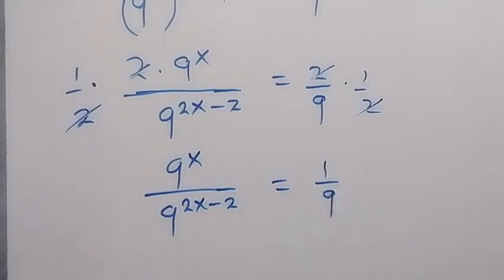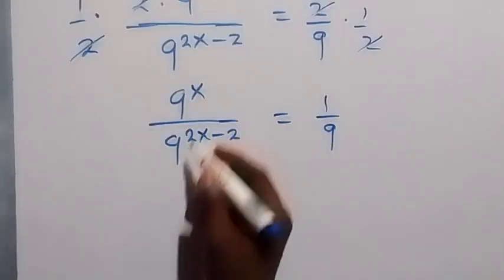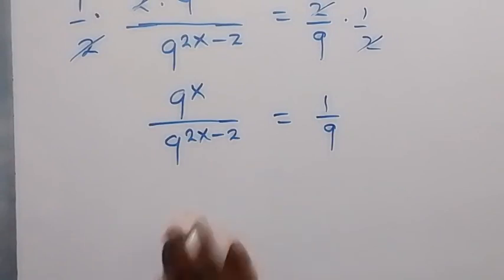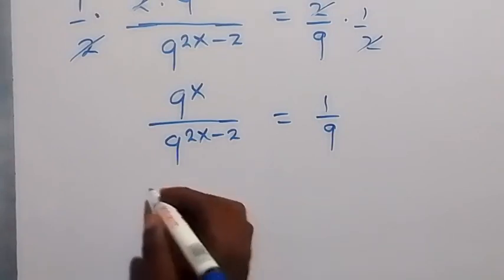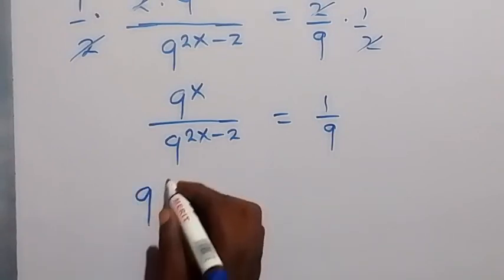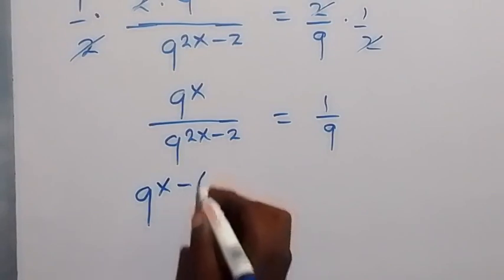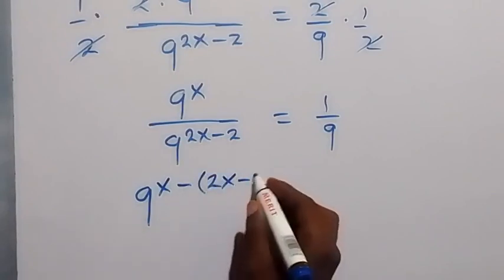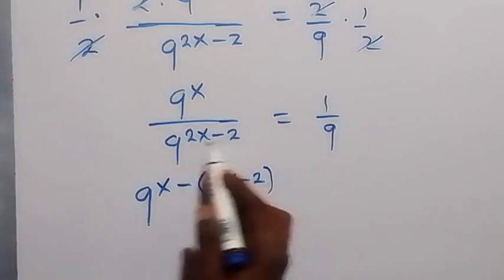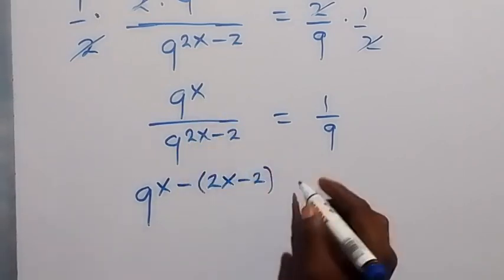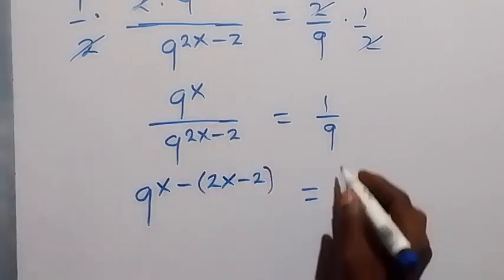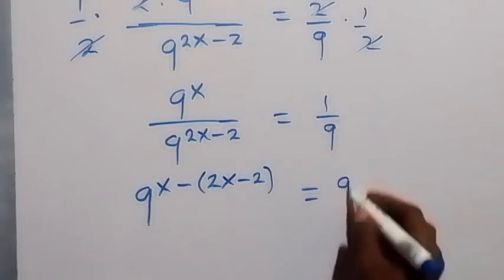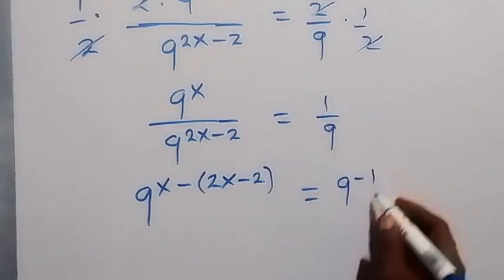From the law of indices, we have the same base dividing, so we can subtract the powers. This gives 9 raised to power x minus (2x minus 2), and we can write 1 over 9 as 9 raised to power minus 1.